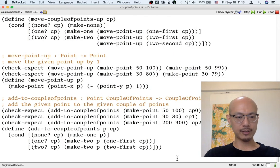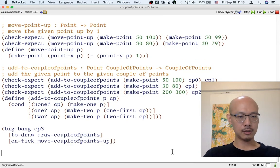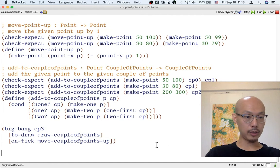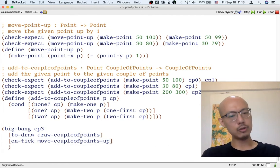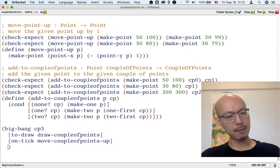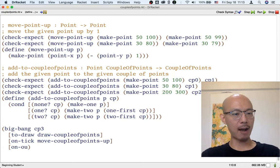But the more fun way to test the function, of course, not the only required way, is to use the function in a Big Bang. So in order to use the function in a Big Bang, for example, in order to add points when the mouse is used, we need to write an on-mouse handler.